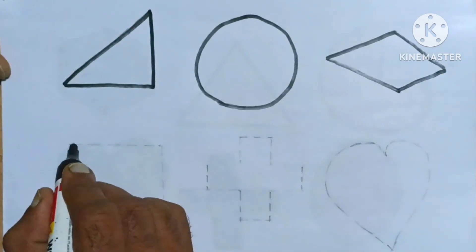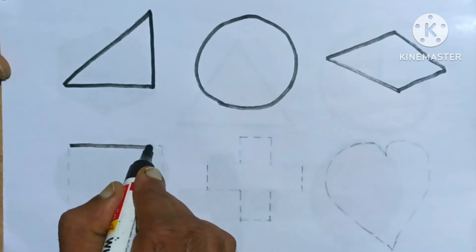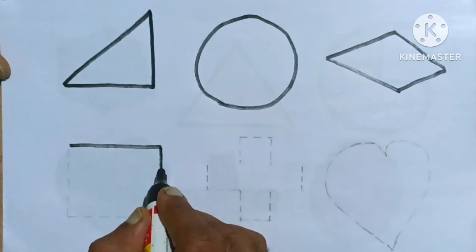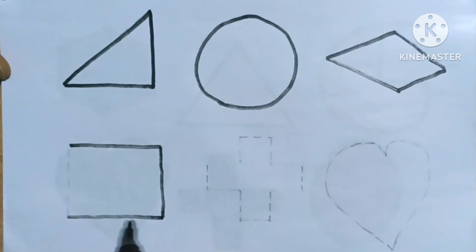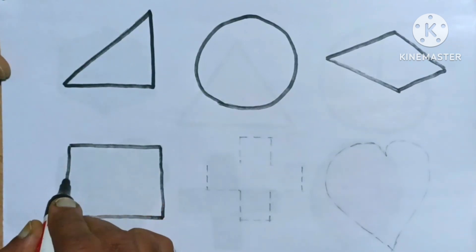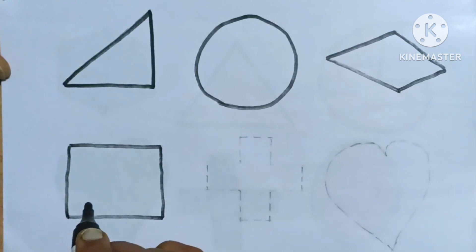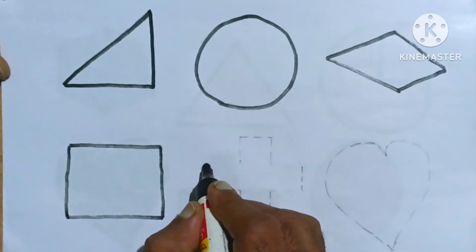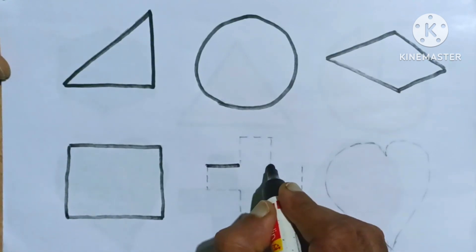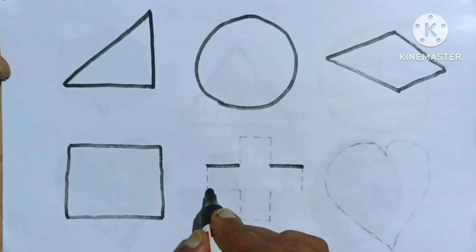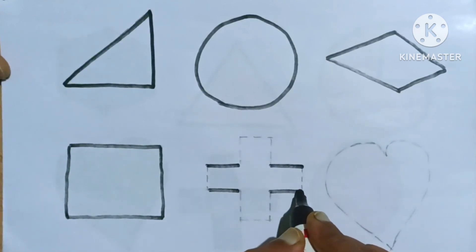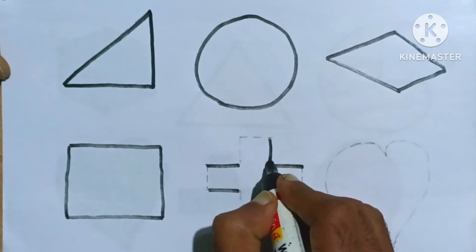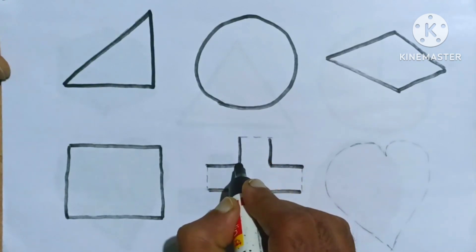A square — it's a square. It's a square shape, kids. Cross — it's a cross shape.